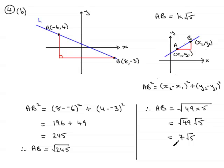7 root 5 then is in this format and it's the distance AB.